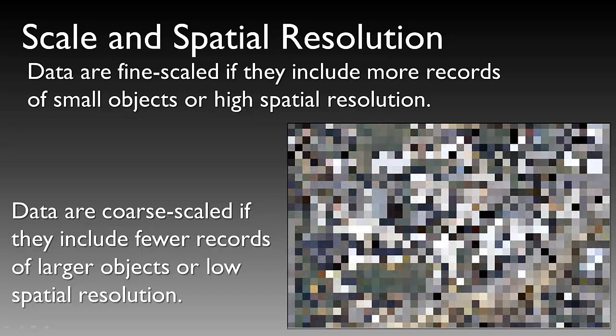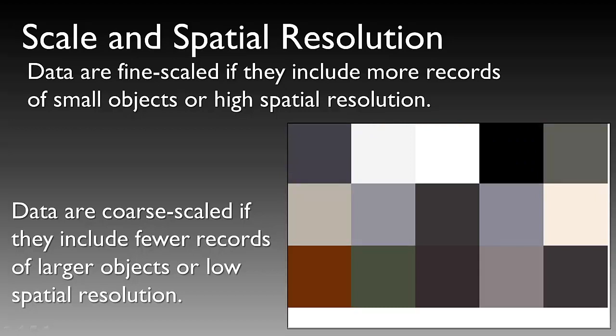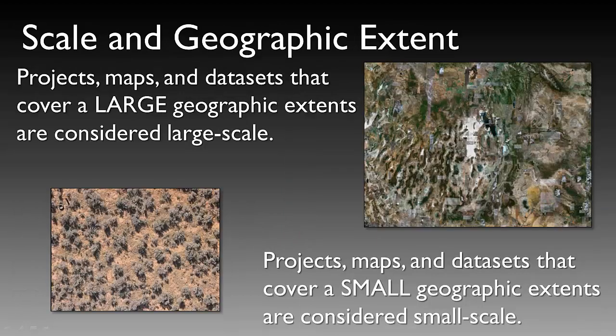Moving to a 30-meter pixel resolution, we begin to lose all definition of buildings. Those familiar with the USU campus may make out the quad or highway 89, but generally this is very coarsely scaled. At 250-meter resolution, there is a significant, if not complete, reduction in understanding of the image. Scale can also represent geographic extent.